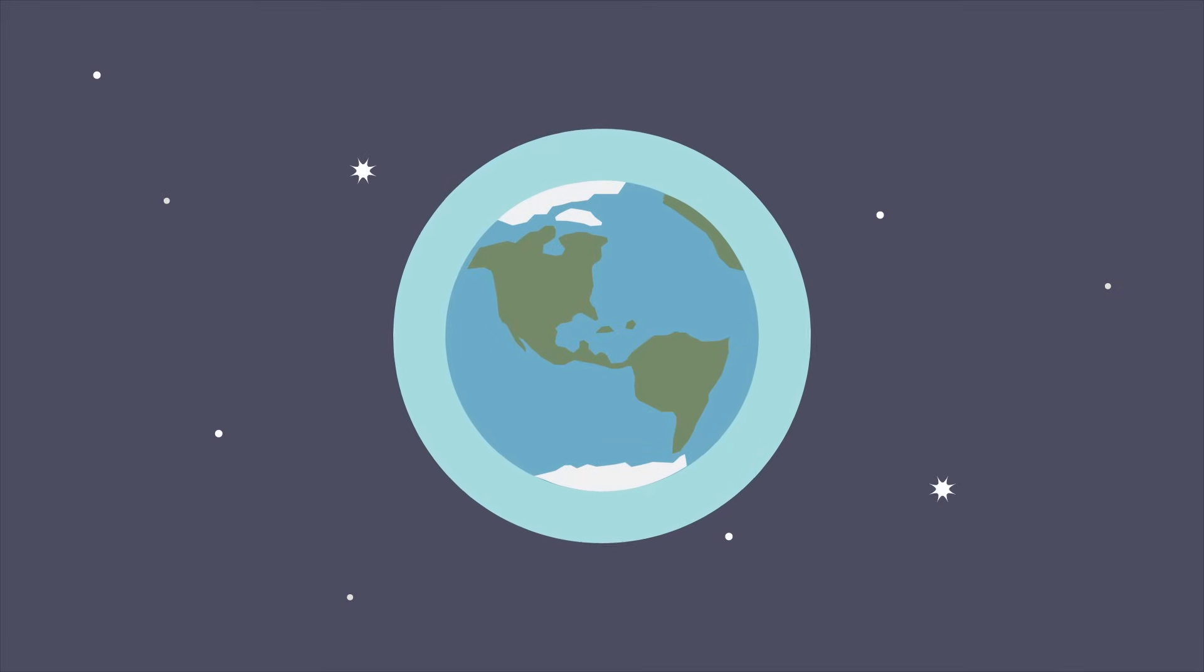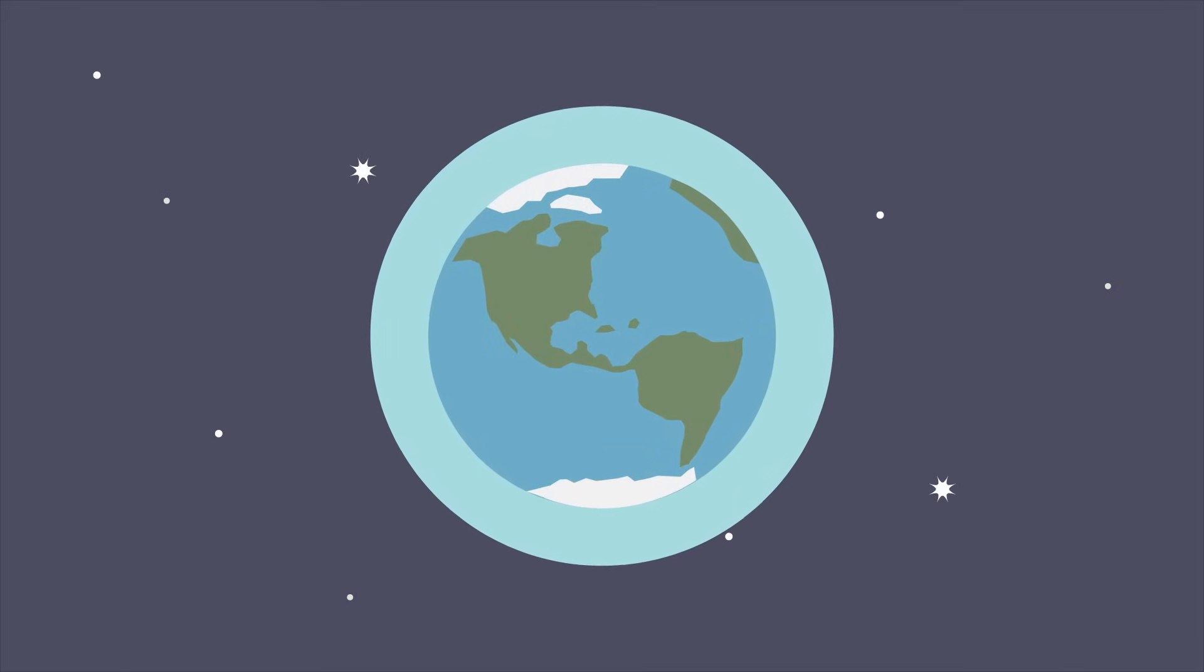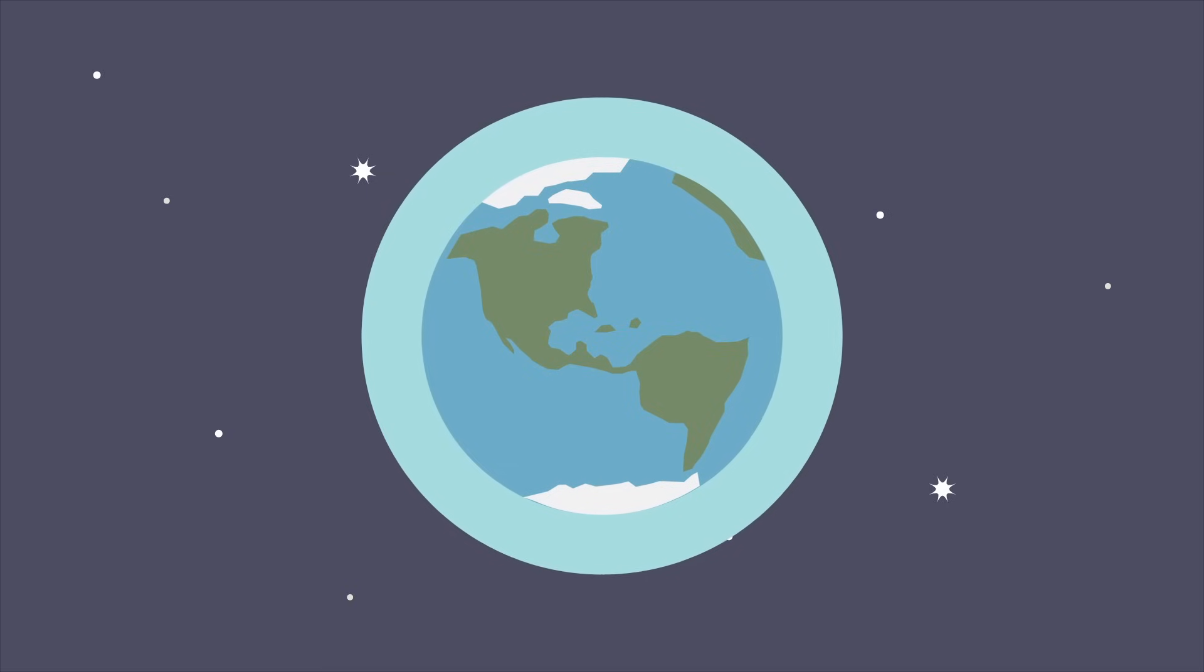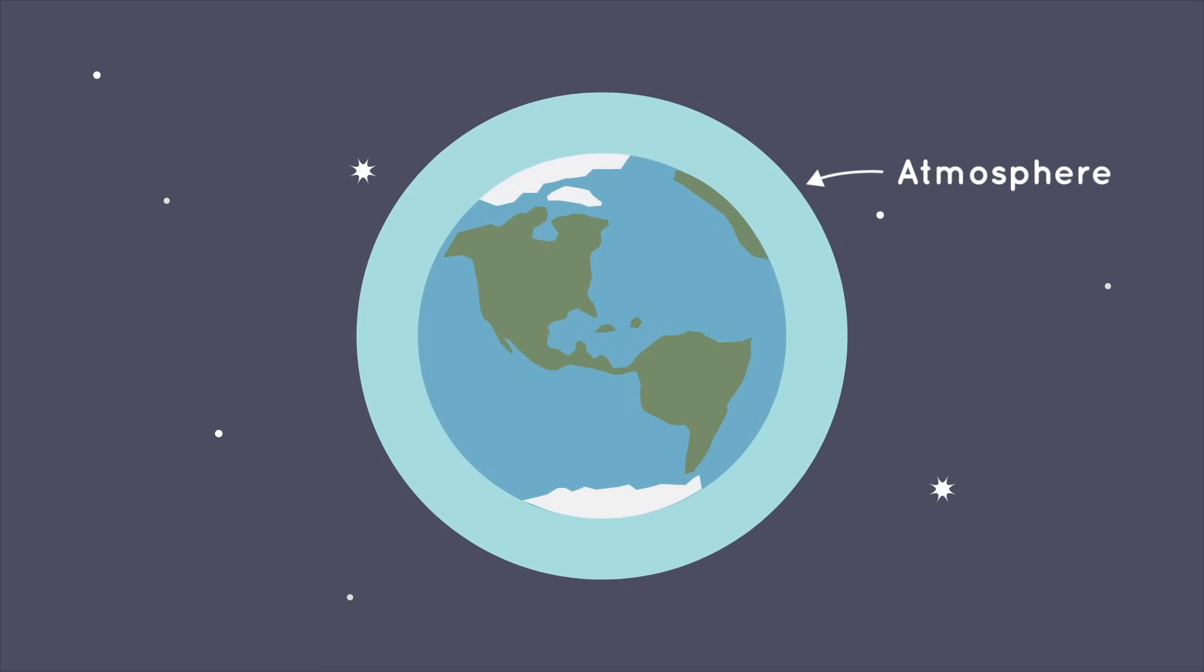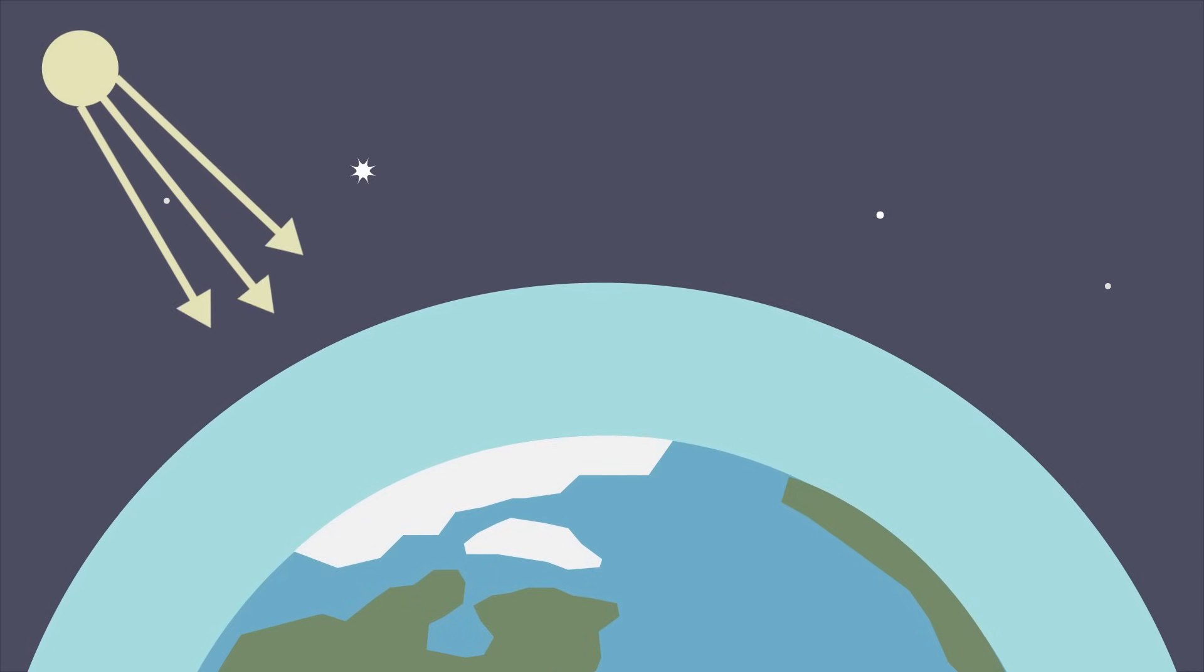The greenhouse effect keeps Earth warm in pretty much the same way. Earth isn't surrounded by glass, but it is surrounded by a jacket of gases called the atmosphere. In the daytime, the sun shines through the atmosphere, warming Earth's surface.